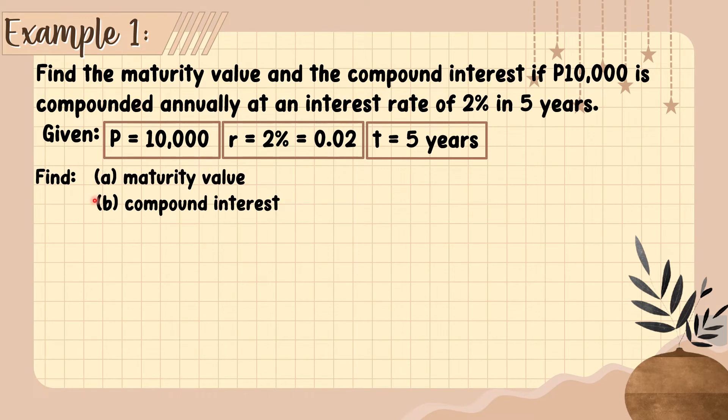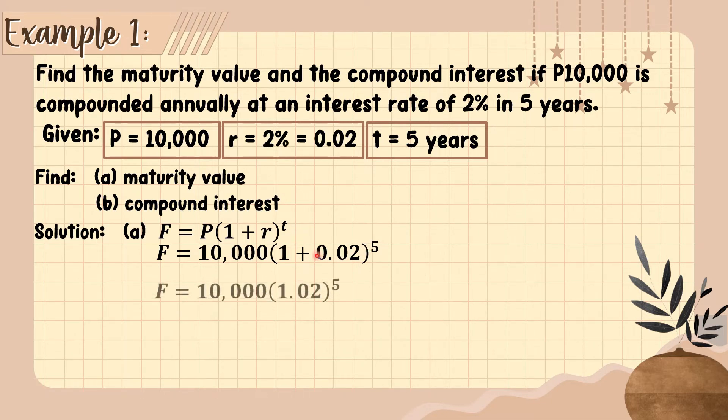What we are going to find is first the maturity value, and second the compound interest. In our solution, let us first find the maturity value following the formula F equals P times the quantity 1 plus r raised to t. Substitute P equals 10,000, rate is 0.02, and time is 5. Add what's in the parenthesis, that becomes 1.02.